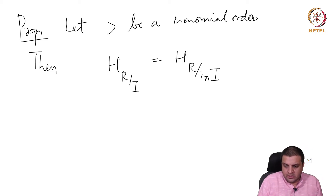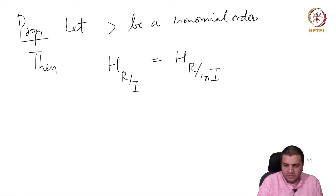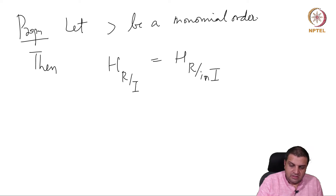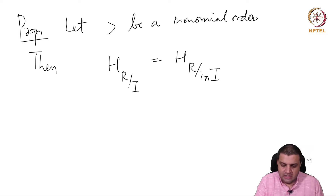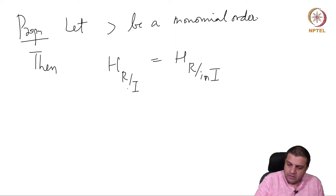We cannot talk about Hilbert series when we are not graded. The initial ideal is always graded — it is an ideal generated by monomials, so it is always graded. But if I is not homogeneous, the left side is not a meaningful object.